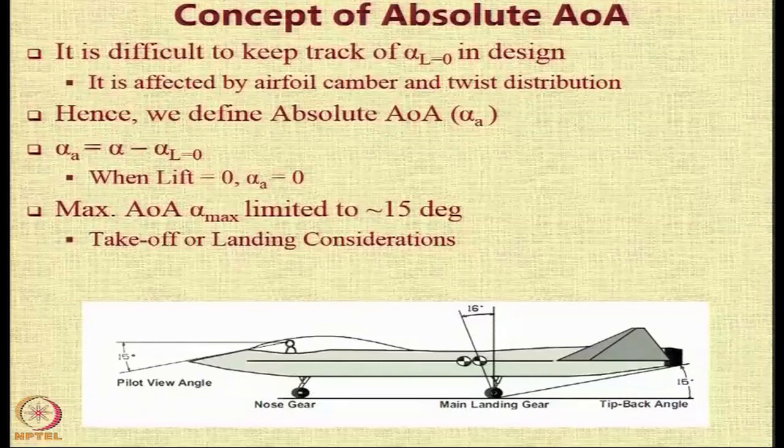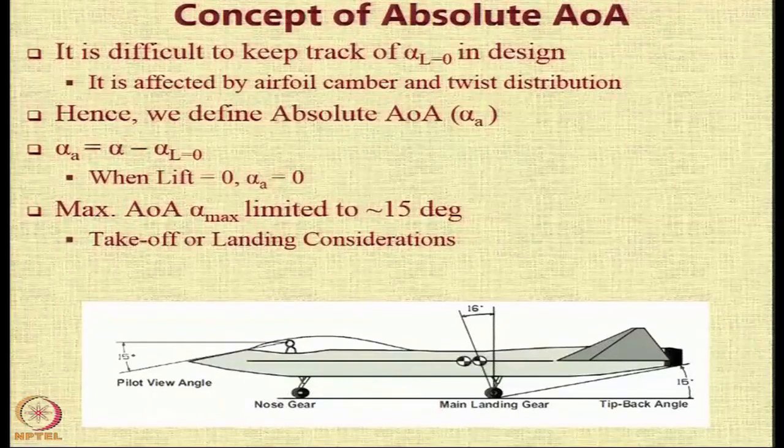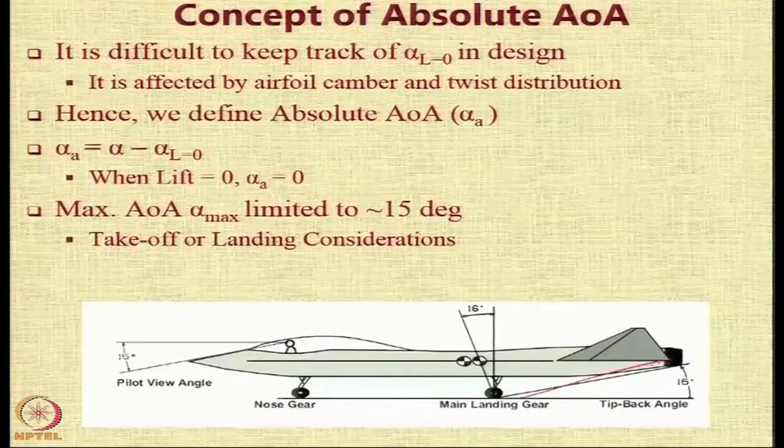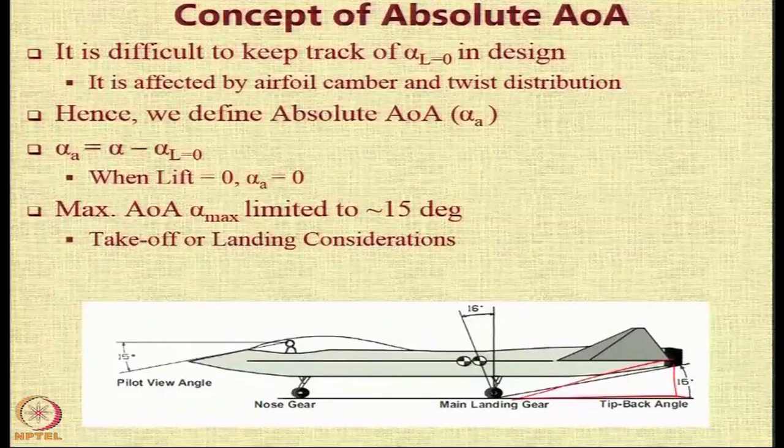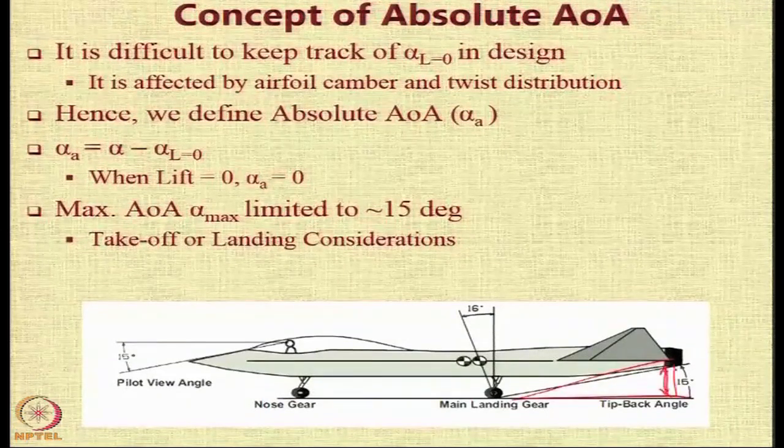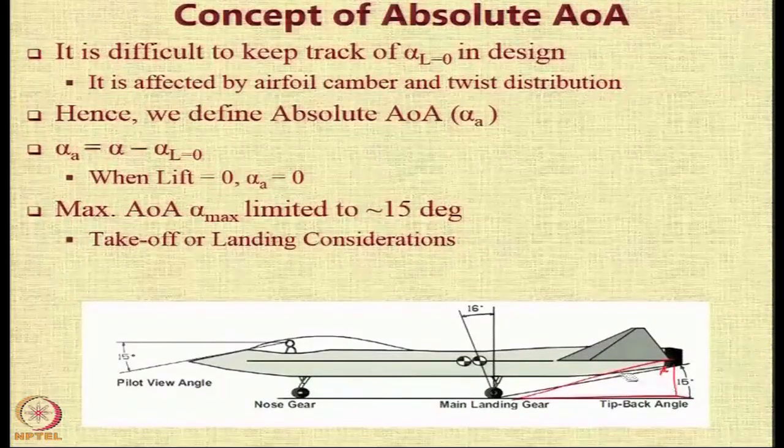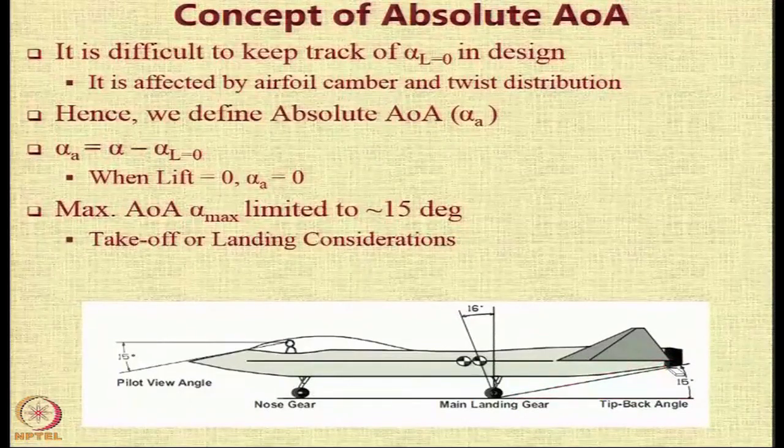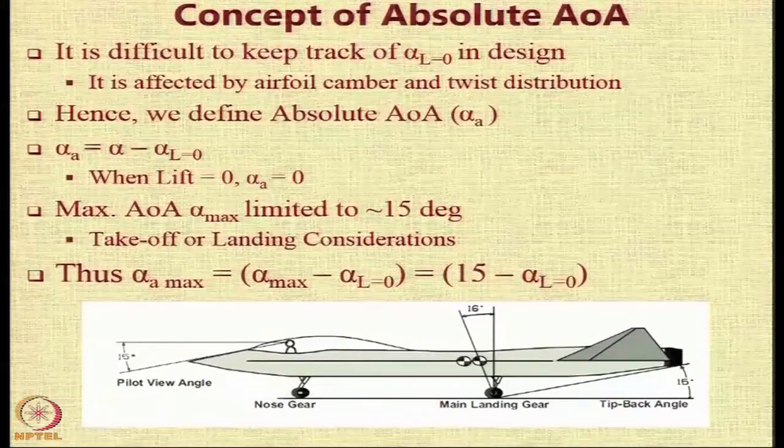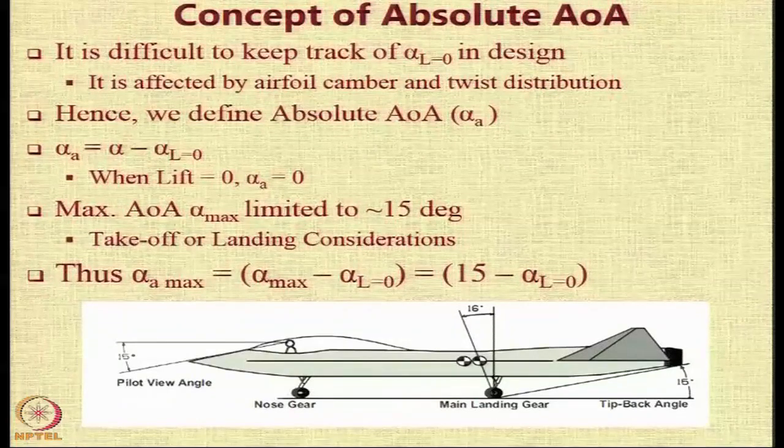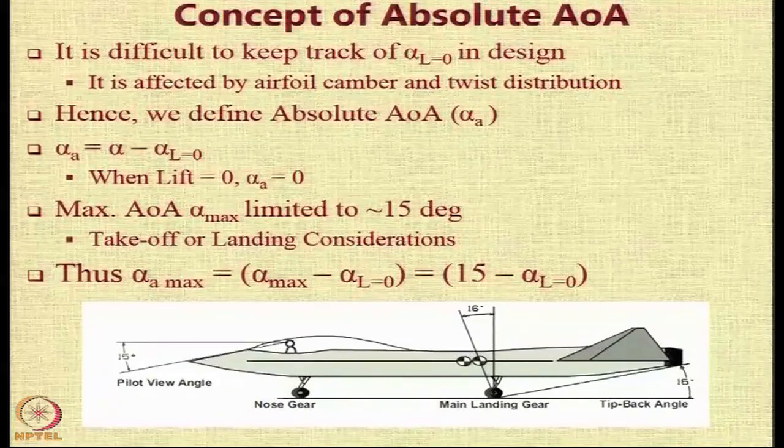For a typical aircraft the maximum angle of attack alpha max during takeoff is limited to 15 degrees or so because of the fact that if you take off at an angle more than that or if you rotate at an angle more than that then the tail will be going to hit the ground. Keeping in mind the takeoff and landing consideration the angle of attack during these operating scenarios is limited to around 15 degrees. Therefore, alpha a max that is the maximum value of the absolute angle of attack will become alpha max minus alpha l equal to 0 or 15 minus alpha l equal to 0.